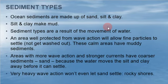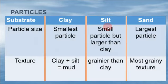Very heavy wave action won't even let sand settle, so that's why we have rocky shores. Our substrate would either be clay, silt, or sand. Clay is the smallest particle size; silt is small but larger than clay; and sand is the largest. In terms of texture: clay plus silt together gives us mud; silt is a little grainier; and sand is the most grainy texture.